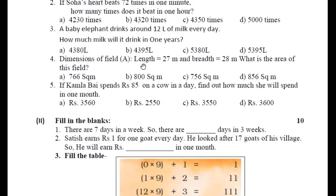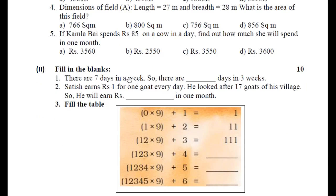Next question: Dimensions of a field — length equal to 27 meters and breadth equal to 28 meters. What is the area of this field? आप इस field का area कैसे निकालेंगे? Area का formula है length into breadth. एक field rectangular size में है, इसलिए length और breadth का multiply करके area निकाल लीजिए.